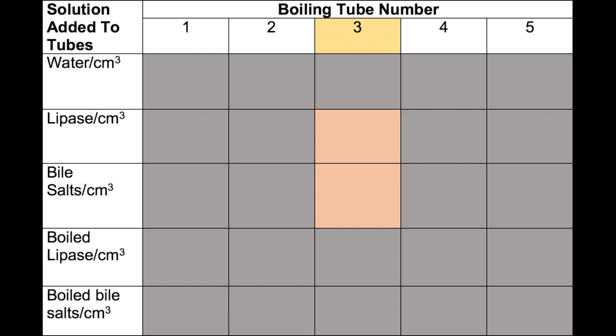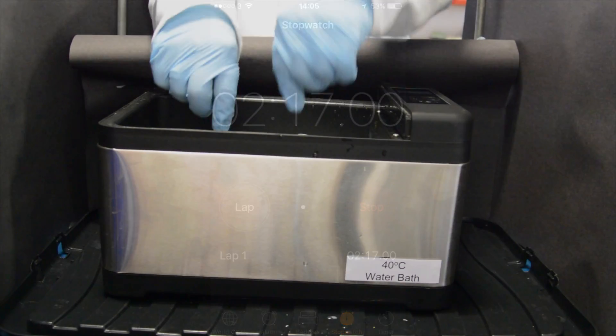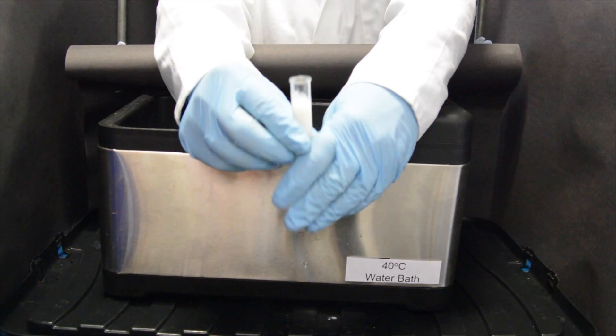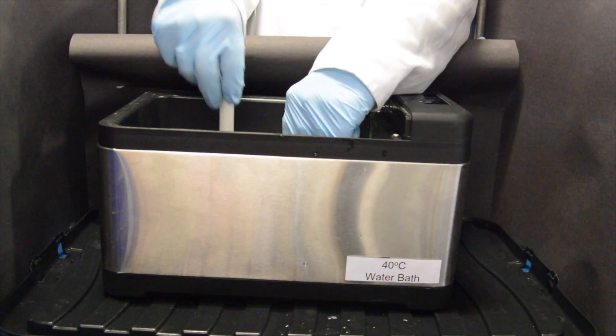Test tube 3 was the fastest to decolorize. A note was made of the time when this occurred. Decolorization was the point at which all of the pink color from the phenolphthalein indicator had disappeared.